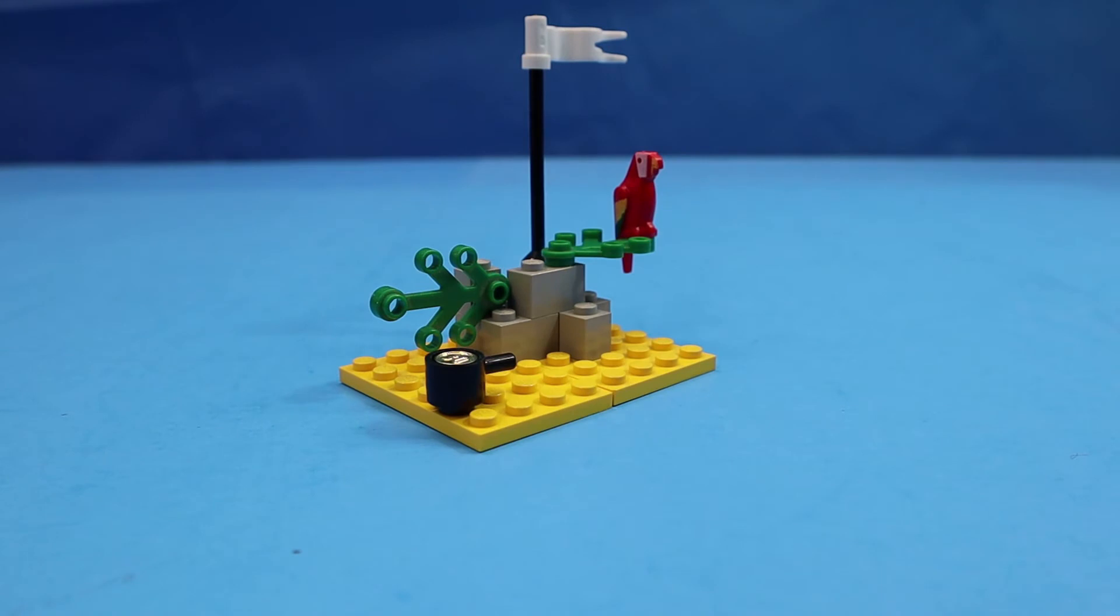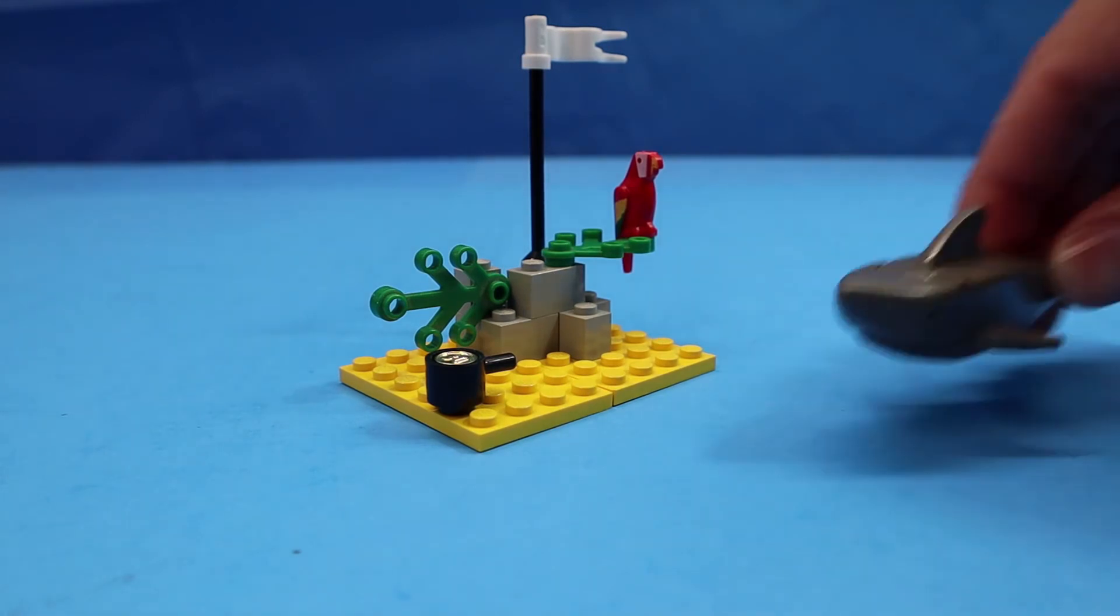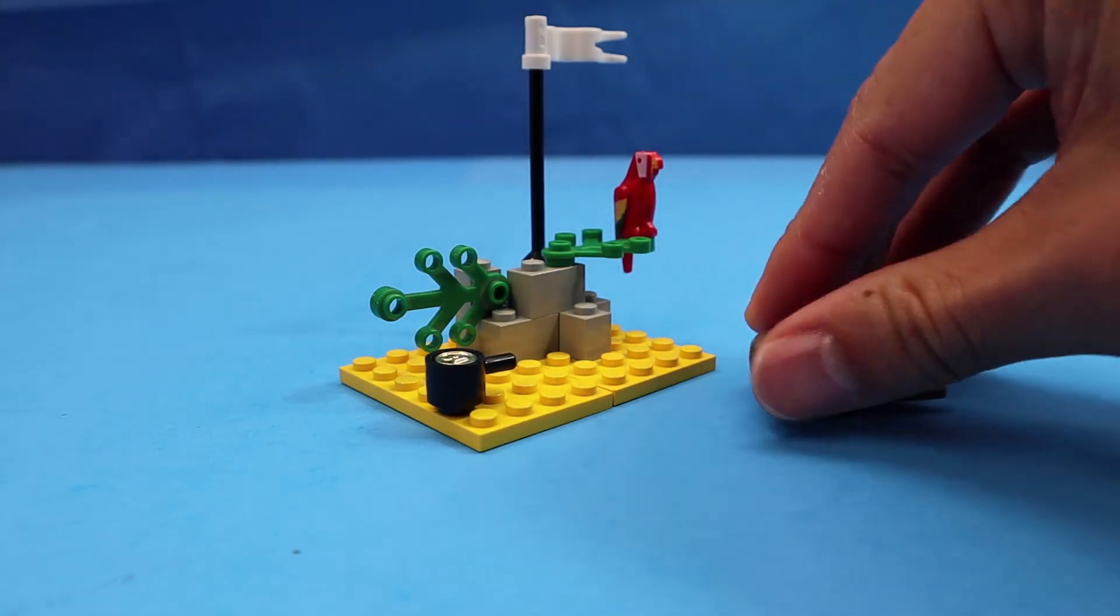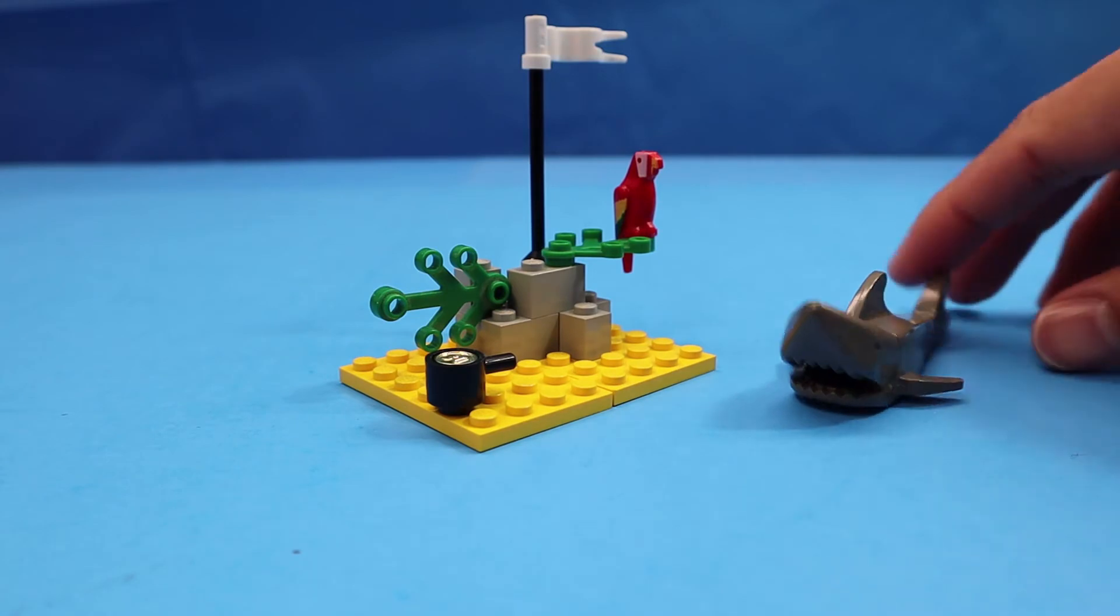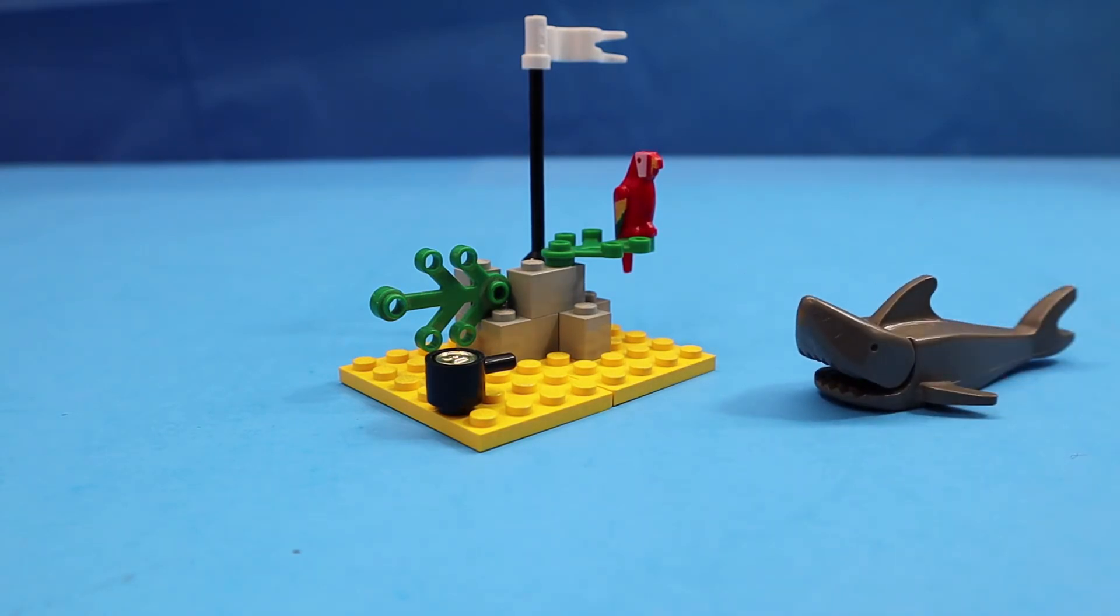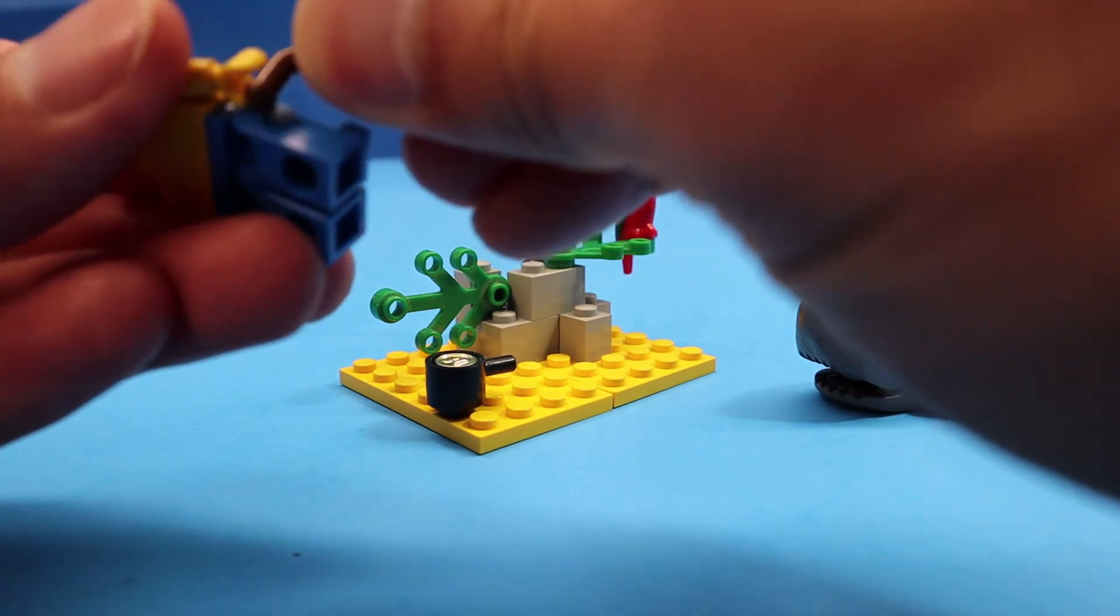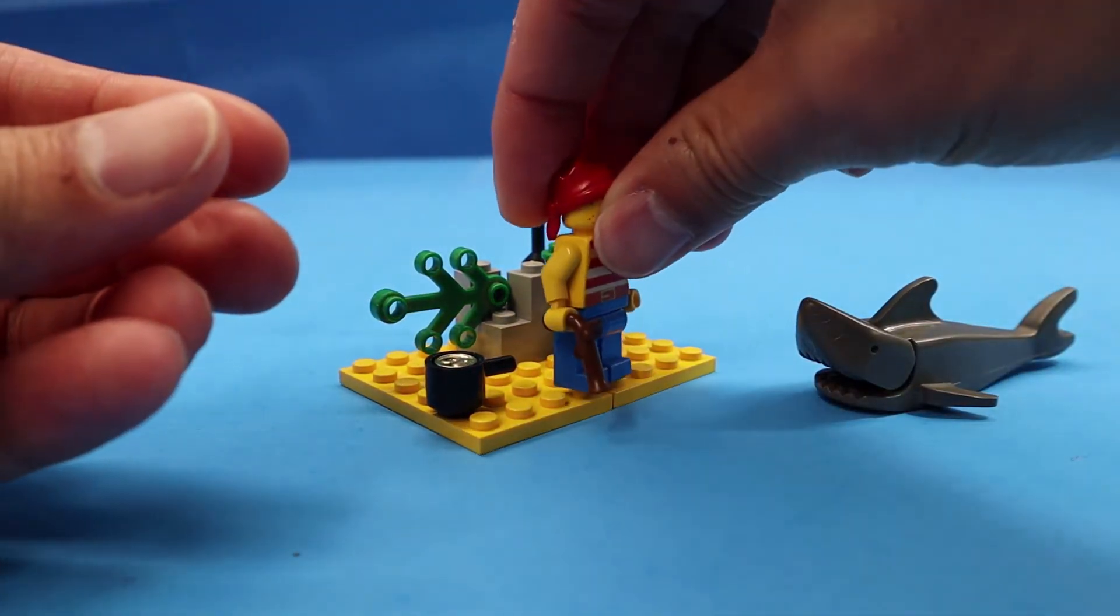So it comes with Popsy the Parrot and a Gray Shark. Of course you get one pirate to sit on this little island.